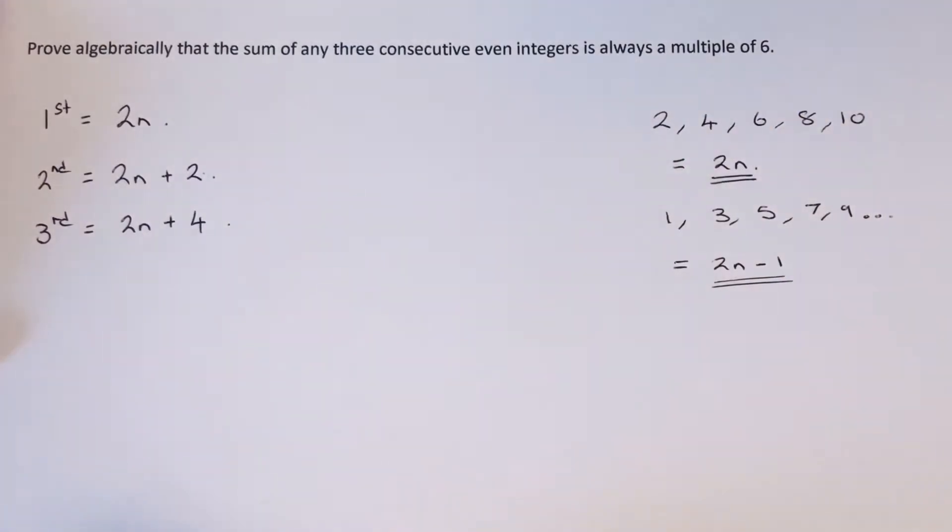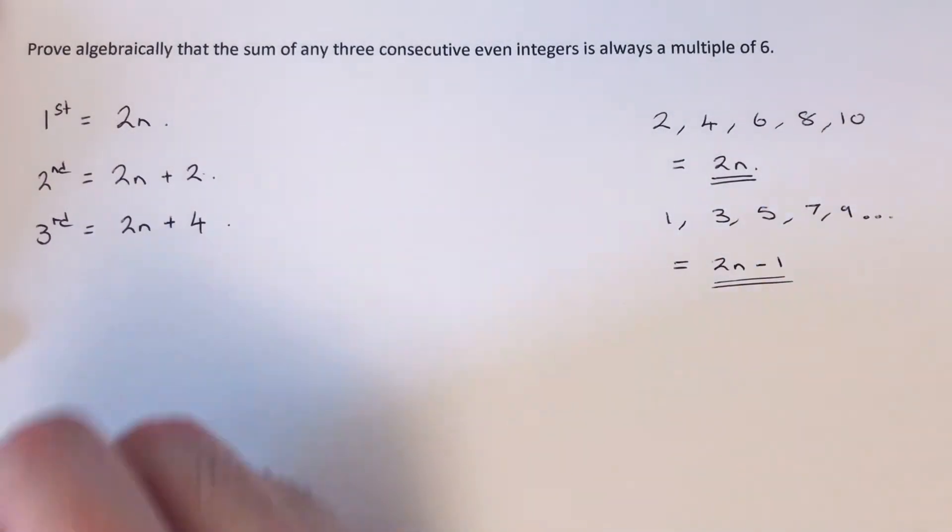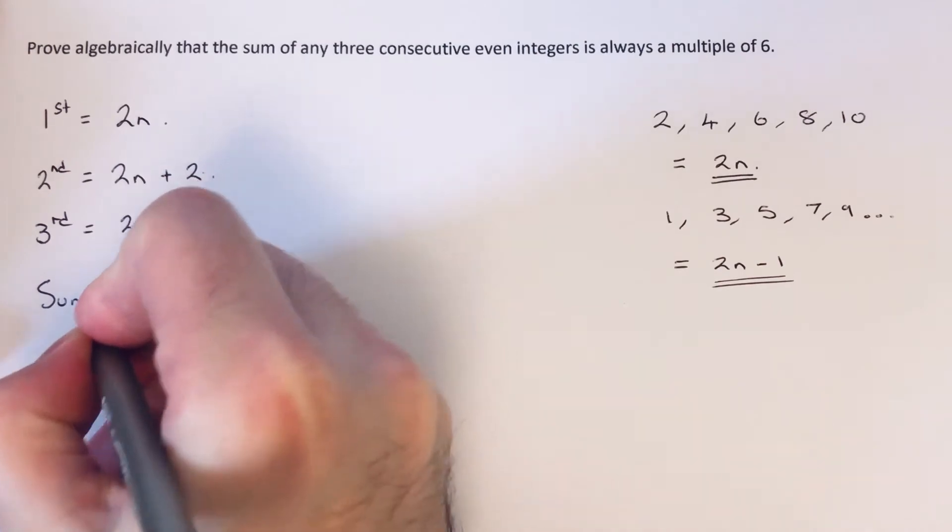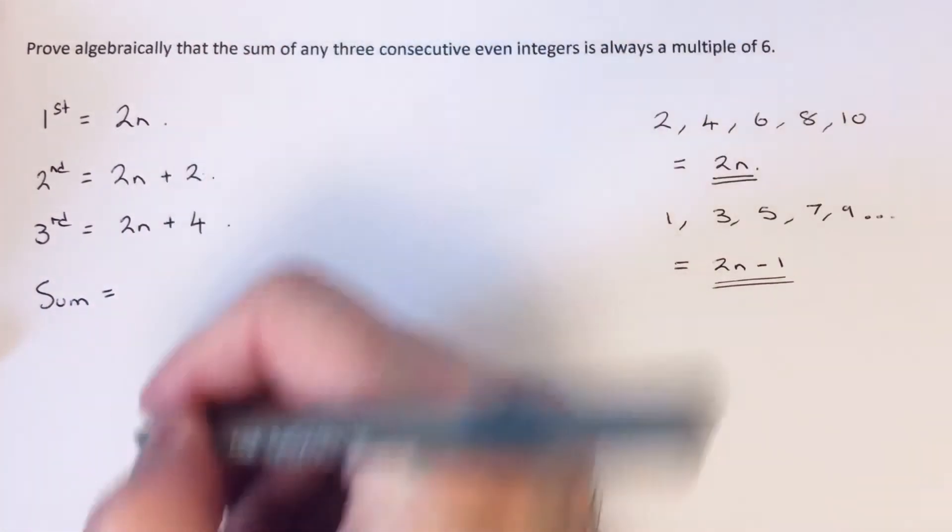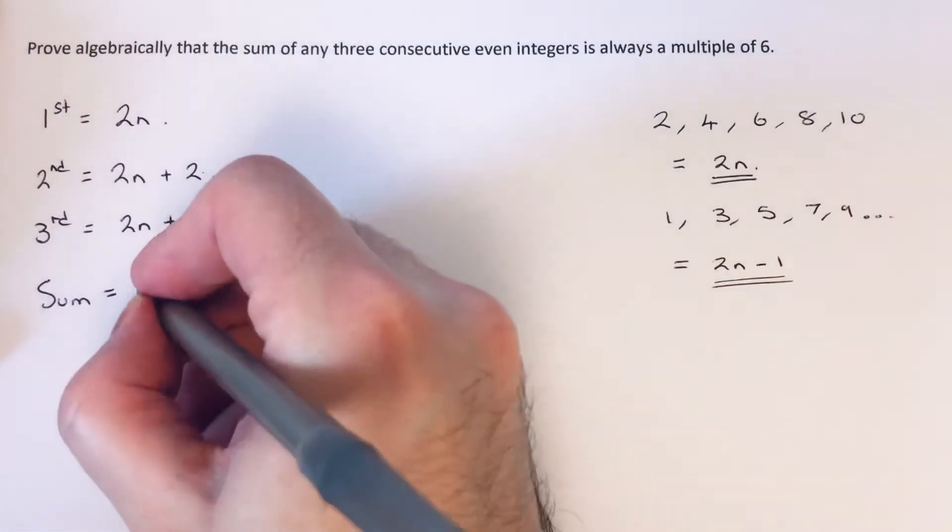We just add another two onto the last one. Now we need to sum these up. The sum is the total, so we just add these up.